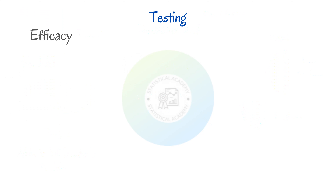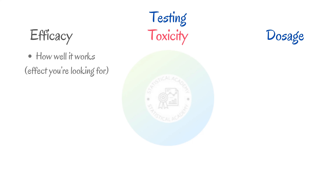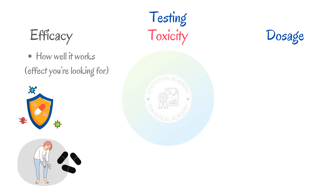Regardless of how we find it though, once we have a substance that we think could potentially be a new drug, we need to start testing it. There are three main things to keep in mind when testing drugs: efficacy, toxicity, and dosage. Efficacy is how well the drug works — how well it produces whatever effect you are looking for. For example, how good is an antibiotic at killing bacteria, or how well does a pain relief medication reduce your pain.